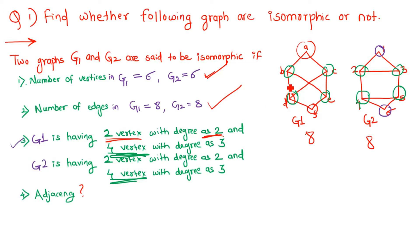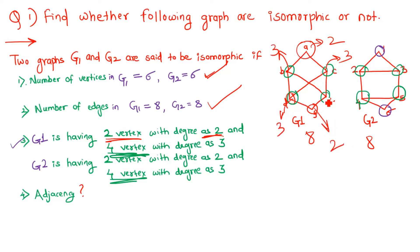Now the third condition: we have to find the degree of each and every vertex and how many vertices have degree 2, 3, 4, and so on. In graph G1, this vertex has degree 2, this has degree 3, this has degree 3, this has degree 3, this has degree 2, and this has degree 3. So there are 4 vertices with degree 3 and 2 vertices with degree 2 in graph G1.